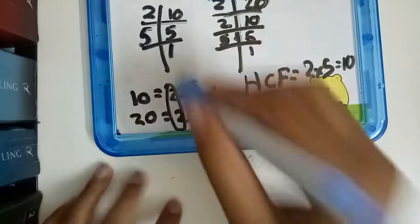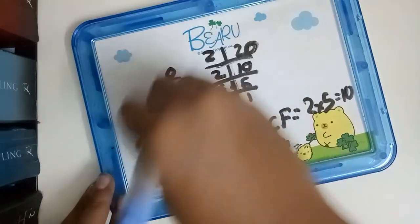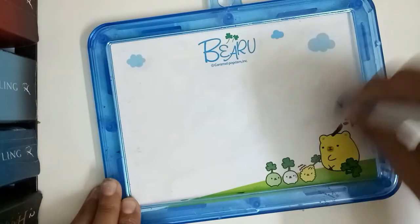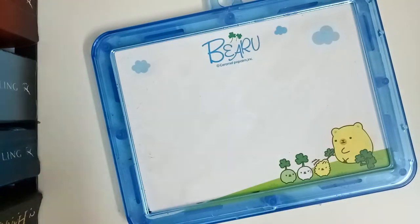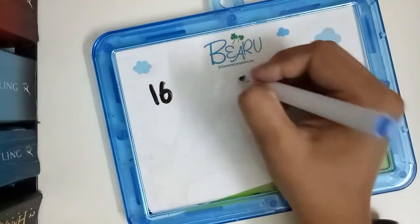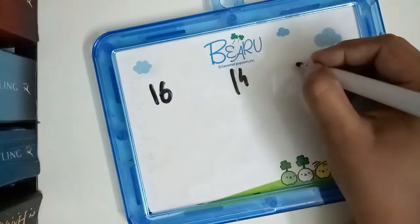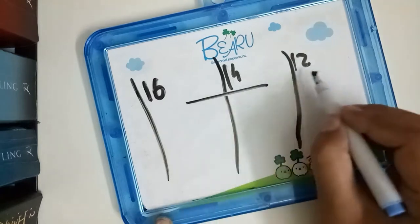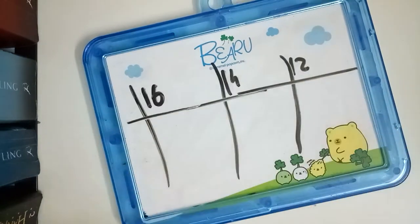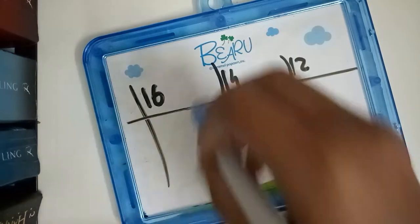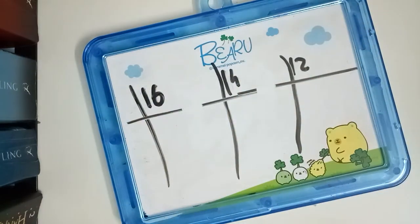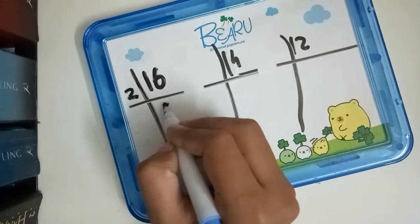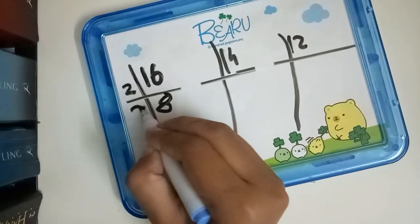All right, now let's try another one. Let's try 16, 14, and 12. For 16: it's divisible by 2, divisible by 2, divisible by 2, divisible by 2.